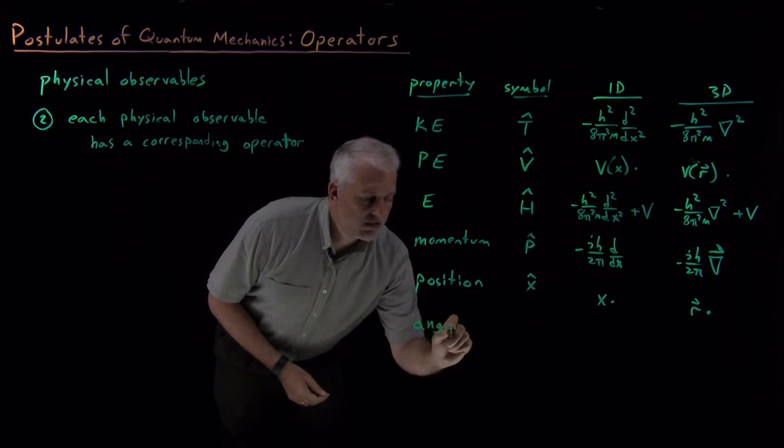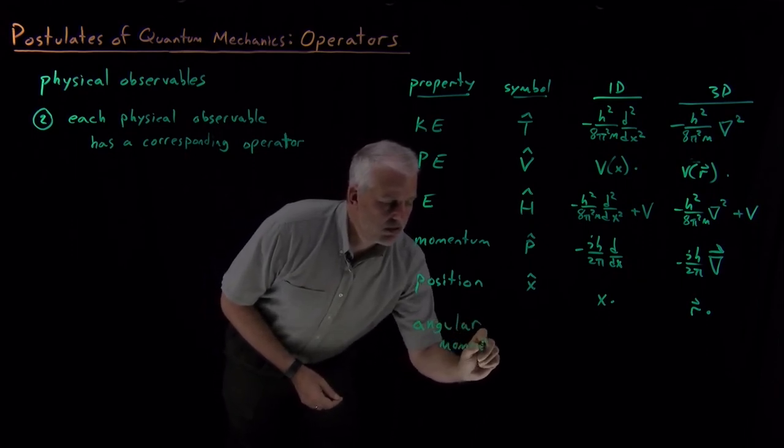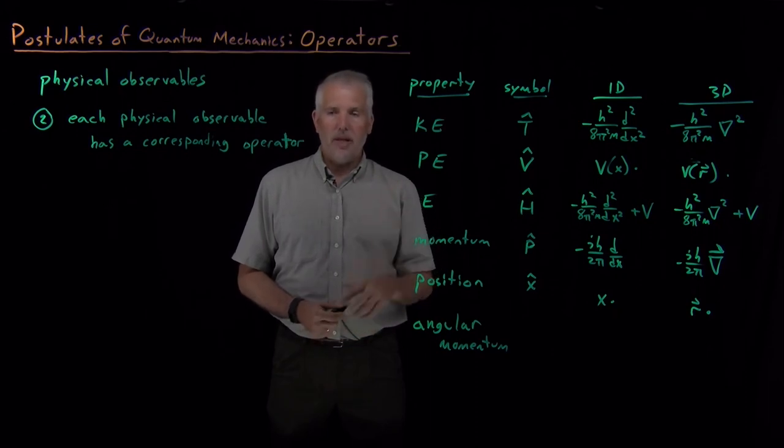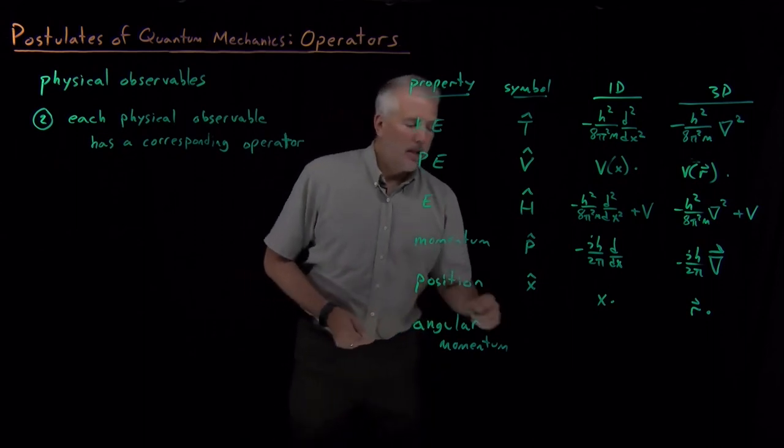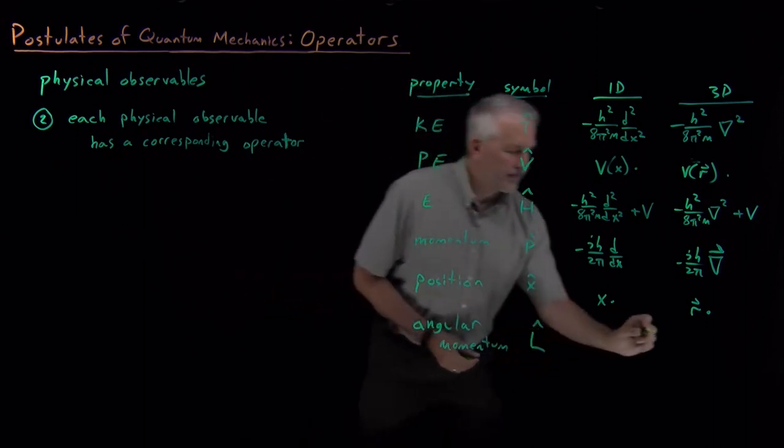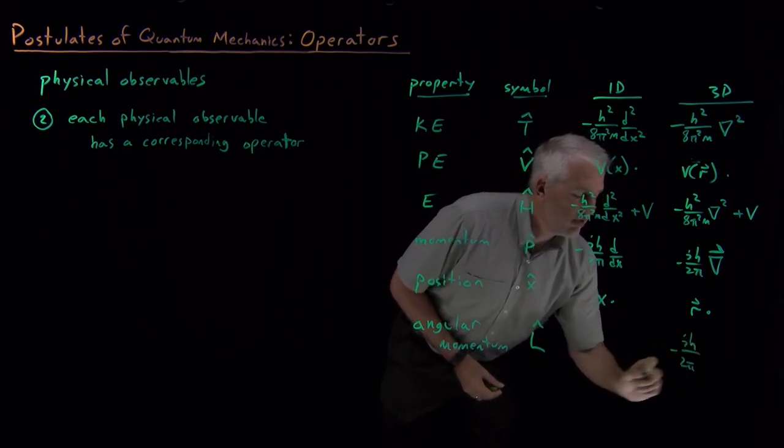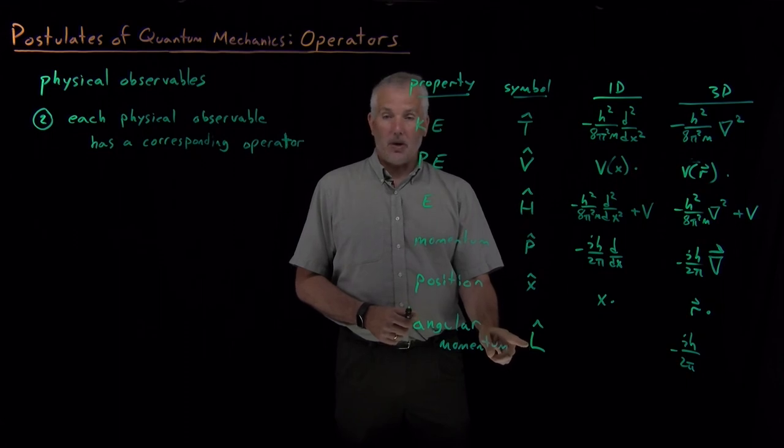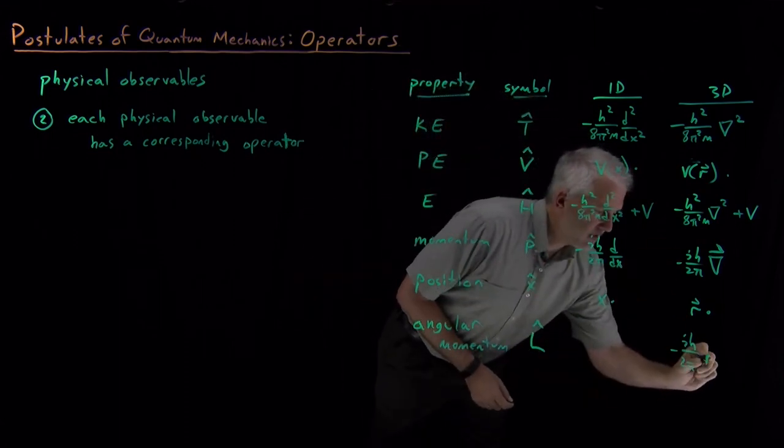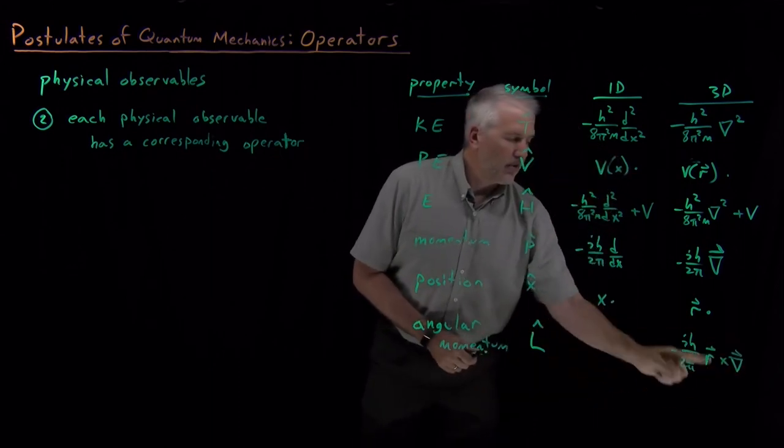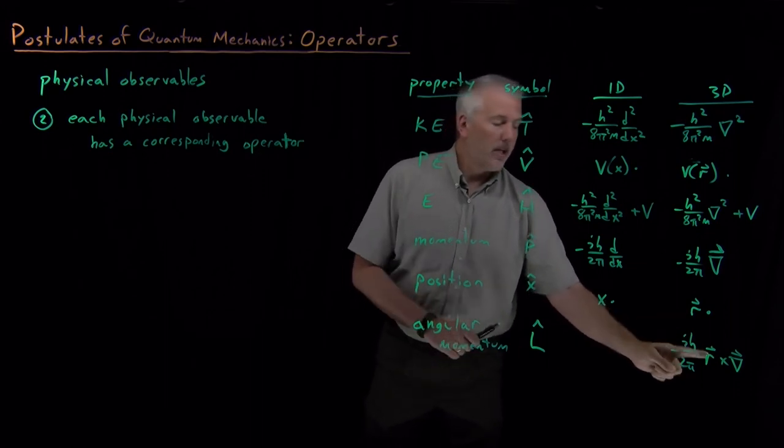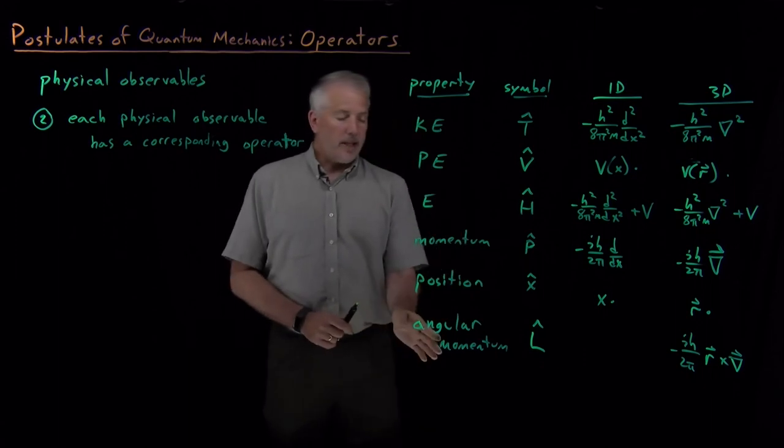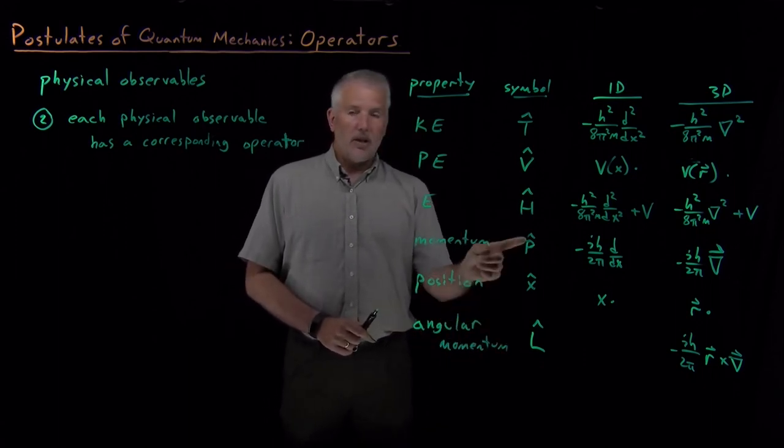And then the last operator that we'll discuss for now, it will really only be relevant once we get to talk about three-dimensional problems, is the angular momentum. So if I have a particle that's orbiting, an electron that's orbiting an atom, and I want to talk about its angular momentum. That operator we'll call L hat. It's also complex. It has this imaginary i in the numerator. And in fact, if you remember enough physics to know that angular momentum should be r cross p, that's exactly what we have here. This is a cross product between the r vector, i.e. the operator corresponding with the position, and minus ih over 2 pi del, which is the operator corresponding with momentum. So in quantum mechanics as well, this operator is the cross of the position operator with the momentum operator.